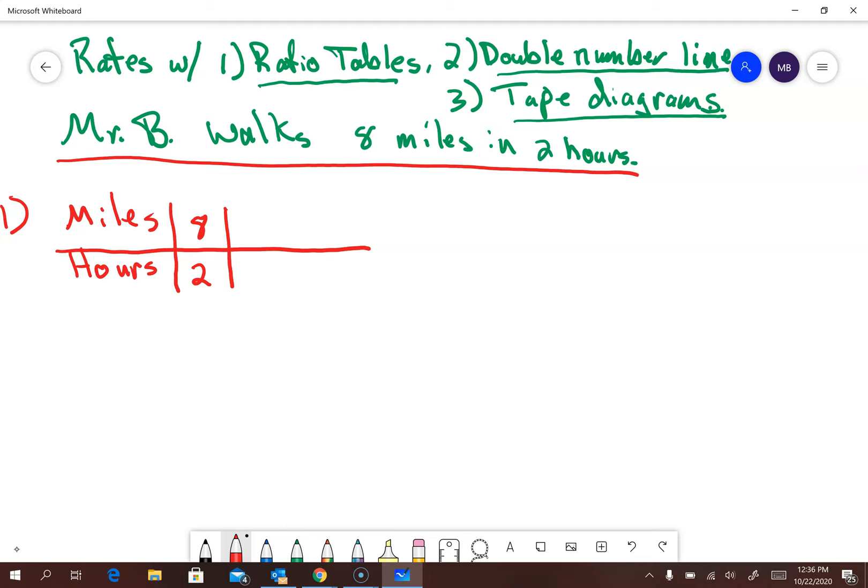And so this is all about equivalent ratios. So whatever I do to these numbers, they're always going to have the same comparison. Let's go for the unit ratio. Why not? So in one hour he's going to walk four miles. But I can keep going. How about in six hours? Well, I went two times three to get six. So eight times three is 24. So this is a ratio table.